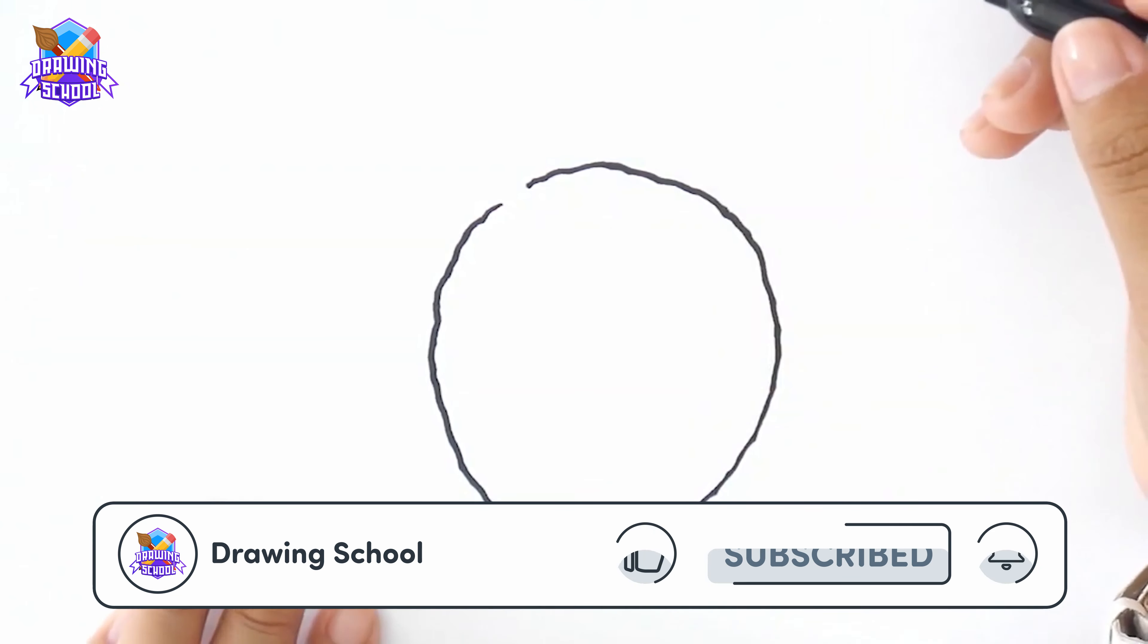Once we have this done, I'm going to do some inside lines like this, leaving the space above empty, so we can place a straw and make it a drink.